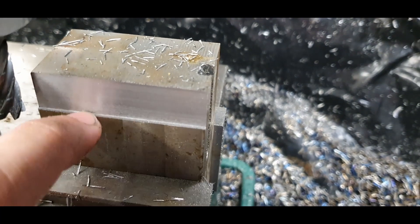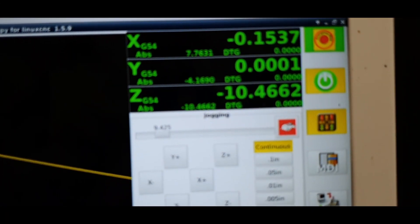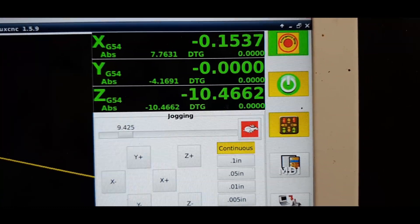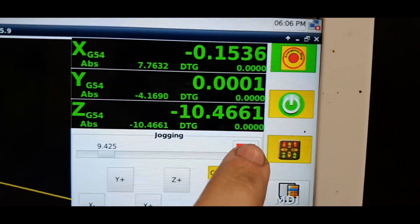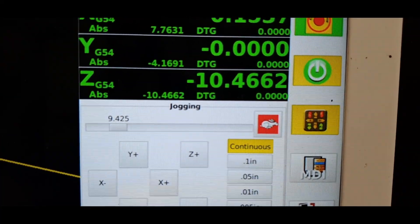I'm gonna move the machine back over. I zeroed it out for the G54 work offset, so right there we're zeroed out. This is normal if you have an open loop system where the controller is actually getting feedback from the encoders. They will want to walk around in the tenths place.